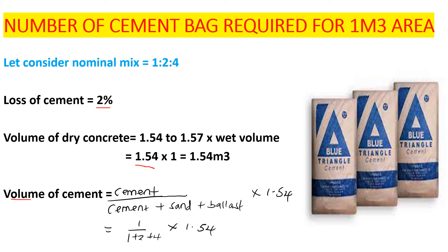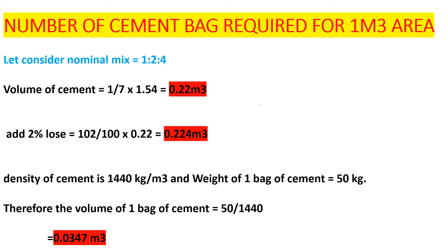To get the volume of cement in the 1.5 cubic meters, we take cement divided by (cement + sand + ballast), then multiply by the volume of dry concrete. Cement is at a ratio of 1, and the total is 1 + 2 + 4 = 7. So it's 1/7 × 1.54, giving us 0.22 cubic meters volume of cement.